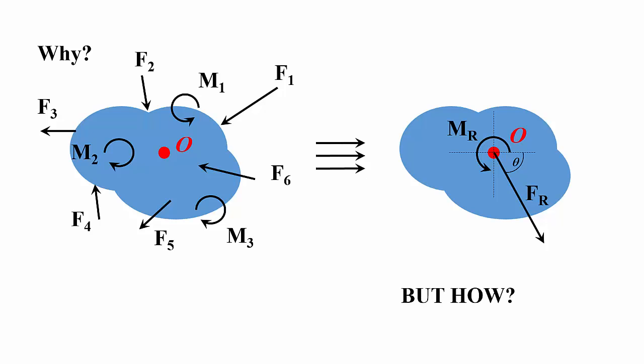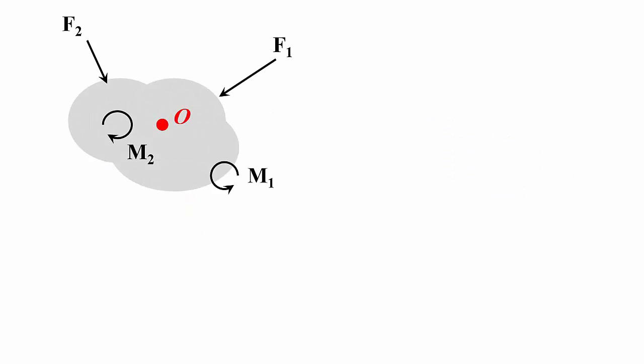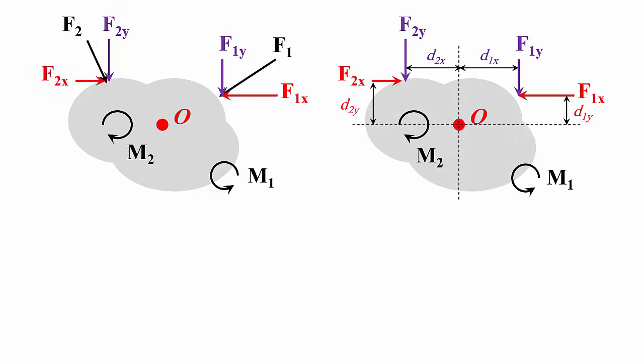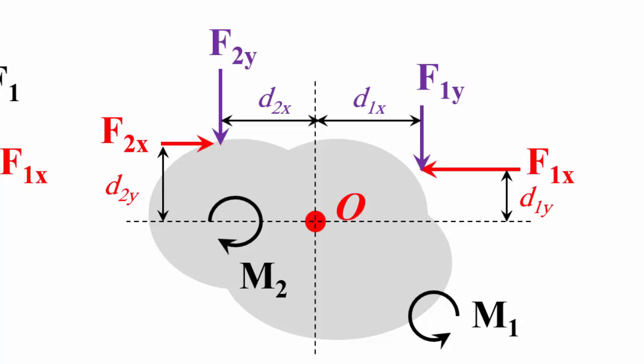But the big question is how? Let's start with this body, two forces only and two concentrated moments. The first step toward simplifying the system is by resolving the forces into its components, the Y and the X components. As we can see, we resolve F1 into F1 in the Y and F1 in the X and F2 into F2 in the X and F2 in the Y. The second step is by specifying the perpendicular distance from each component to the Y and X axis as shown in this figure.